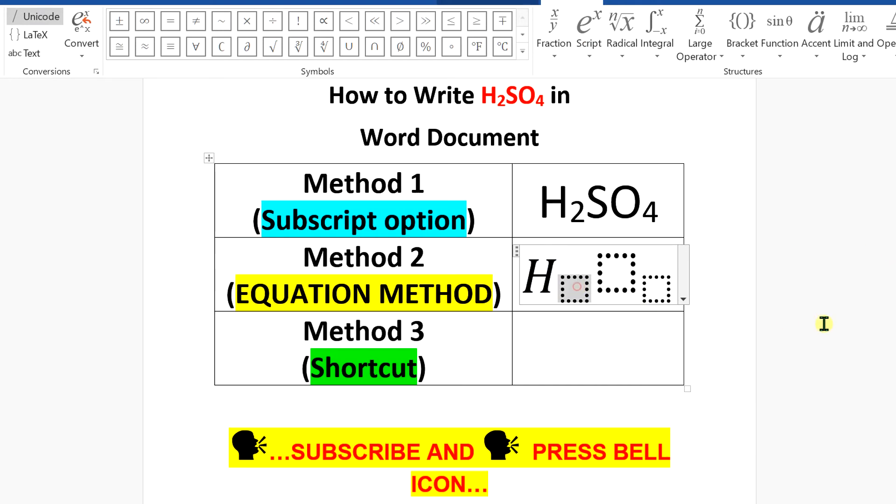In the first box write H, in the second box write 2, in the third box type SO, and in the last box type 4.